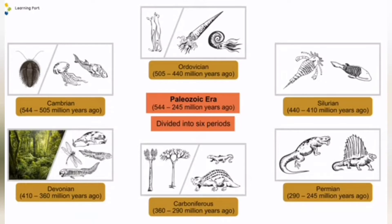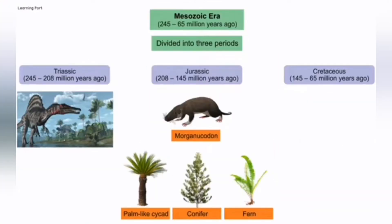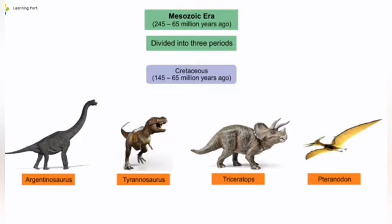And the Devonian, which lasted 410 to 360 million years ago. The Mesozoic era lasted 245 to 65 million years ago, and is divided into three periods. The Triassic, in which the first dinosaurs evolved, lasted 245 to 208 million years ago. The Jurassic lasted 208 to 145 million years ago, with the earliest mammals. The earliest non-flowering plants like conifers, ferns, and cycads also appeared.